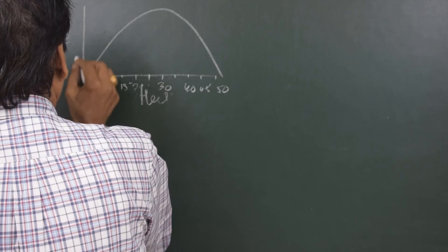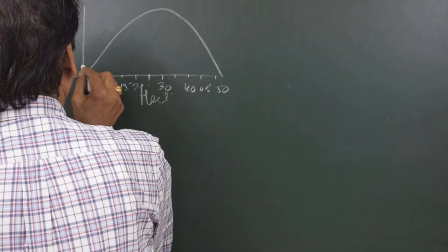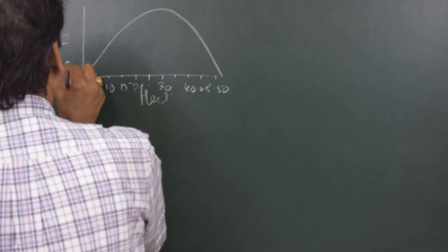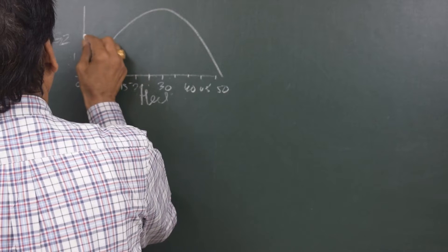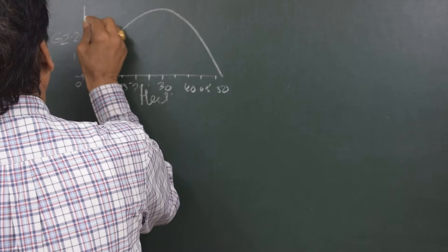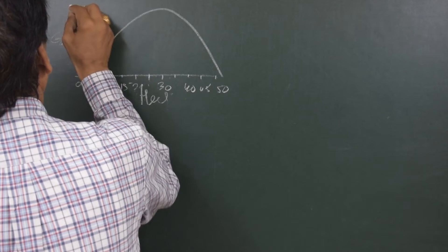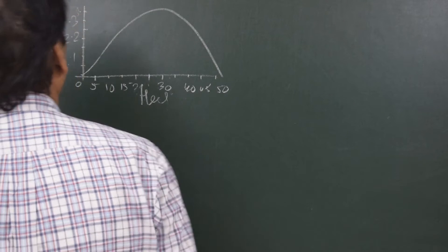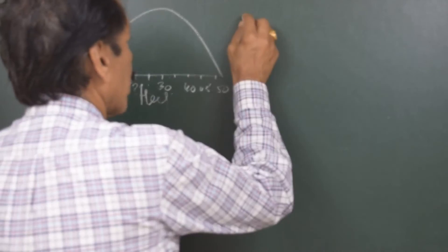Now this is the righting lever. Y axis represents the righting lever and let this be 0.05, 0.1, 0.15, 0.2, 0.25, 0.3, 0.35 and so on. Now let's make the table for the calculations.